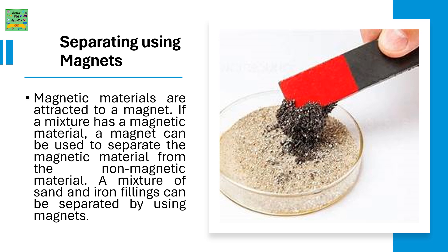Separating using magnets: magnetic materials are attracted to a magnet. If a mixture has a magnetic material, a magnet can be used to separate the magnetic material from the non-magnetic material. A mixture of sand, which is non-magnetic, and iron filings, which are magnetic, can be separated by using magnets.